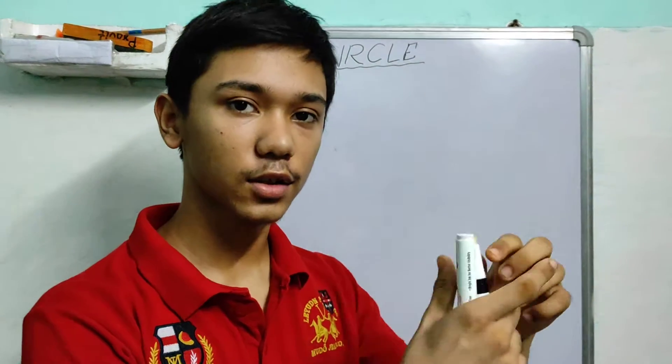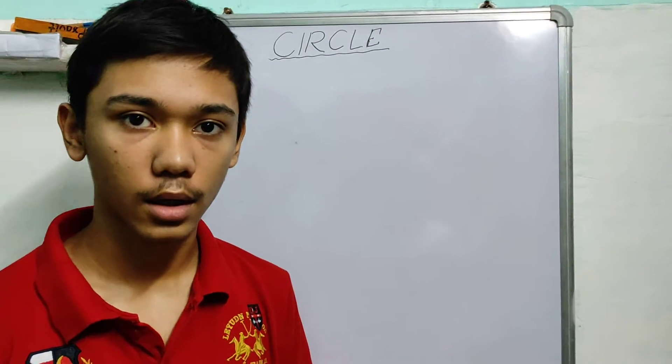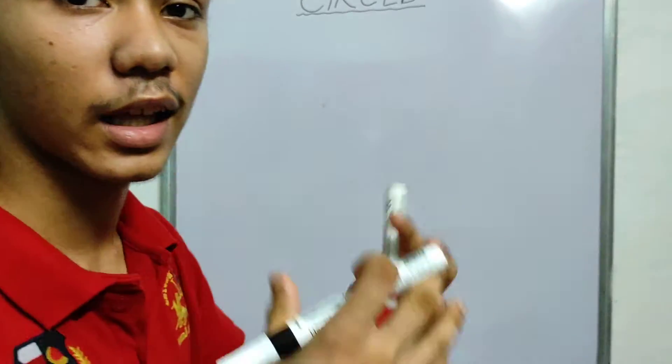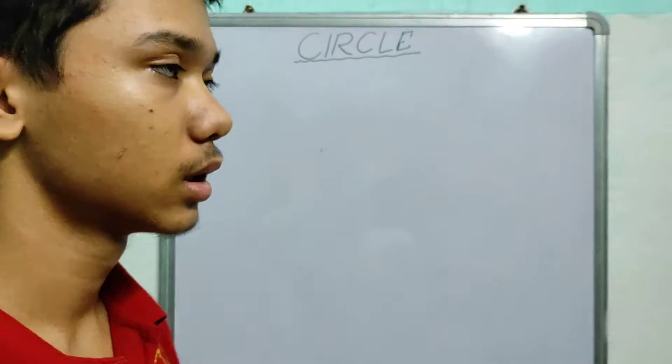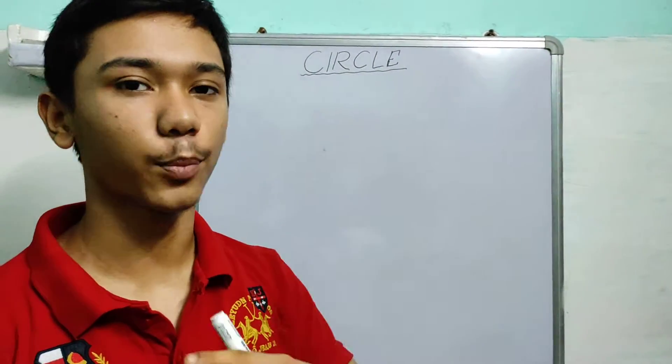Hi, today we will study areas of some figures which are affiliated to circles. The area of a circle is πr², where r is the radius, and the perimeter of a circle is 2πr. Pi is a constant which is approximately 3.14 and often represented as 22/7.